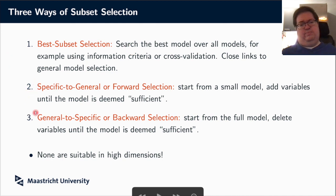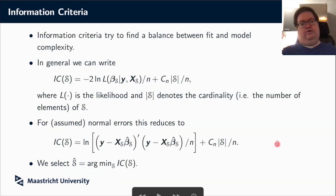The other approaches are a bit more pragmatic, because searching over all models is generally complicated. So what we could also do is what we call in econometrics typically specific to general, but in statistics it's called forward selection, where you start from a small model which only includes those variables you definitely want to have in, maybe only an intercept. And then you start recursively adding variables. You can also go the other way around. You start from a very big model, the full model, and then you start deleting variables until you reach some sort of sufficient model. Now, I will discuss all three in turn, and I will show that actually none of them are suitable in high dimensions.